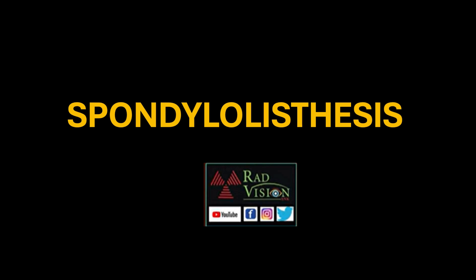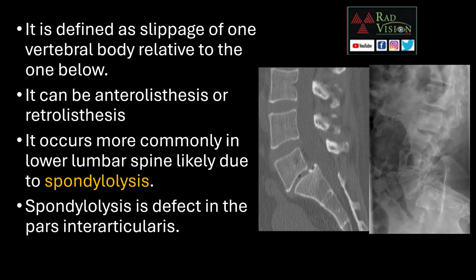Hello everyone. In this short video we will be discussing spondylolisthesis. It is defined as slippage of one vertebral body relative to the one below. It can be anterolisthesis, which is forward slippage, or retrolisthesis, which is backward slippage.